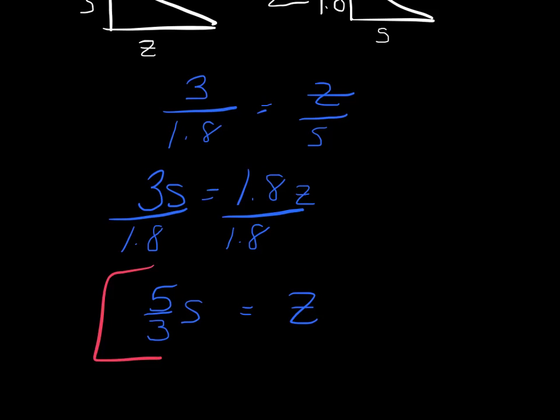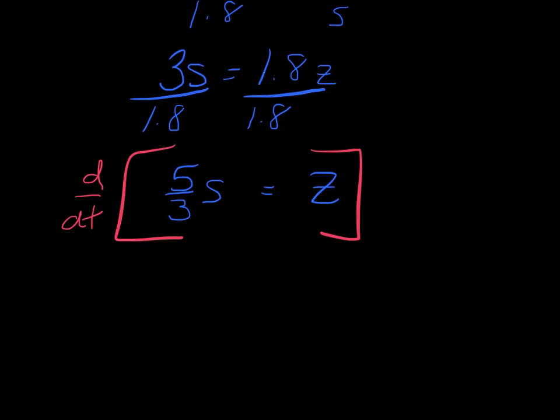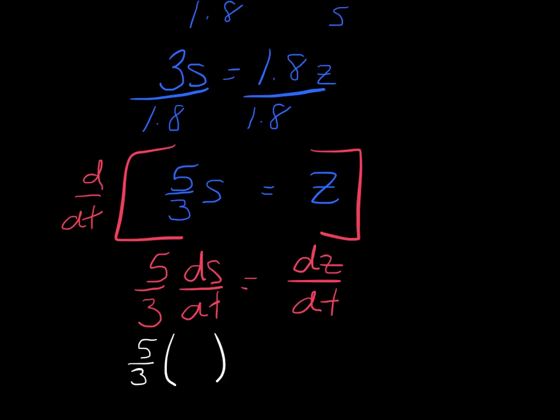So I've got Z equals 5/3 S. Now I'll take that derivative with respect to time. Again, if it doesn't have a T in it, you're giving it a d variable dT. So I've got 5/3 dS/dt equals dZ/dt. And dS/dt is what we previously found. We said it was decreasing at a rate of negative 3.6 equals dZ/dt. So I should get at a rate of negative 6 meters per second. And there you go.